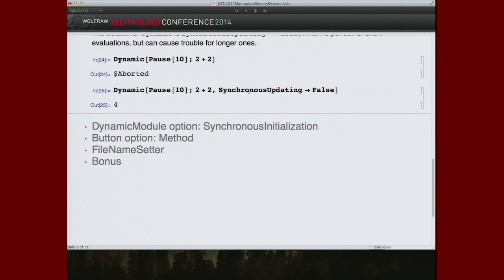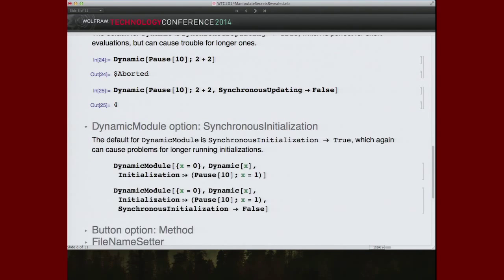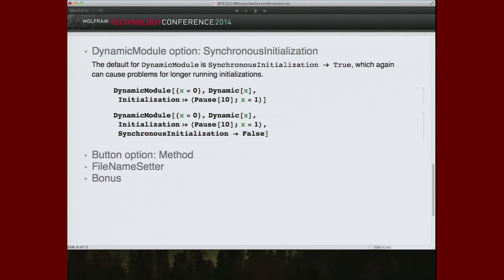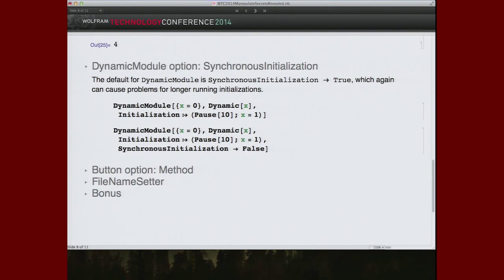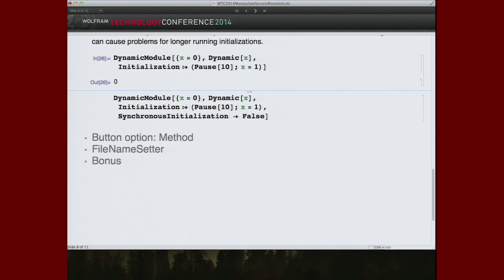So synchronous updating is a dynamic option. It's also a manipulate option. We looked at initializations. There is a similar flag that lets you say whether or not you want an initialization to run synchronously. So here we have the default mode, which is, yes, I want this initialization to be synchronous. But, of course, that's going to time out. Notice we have no indication that it timed out, other than the value of x didn't become one.